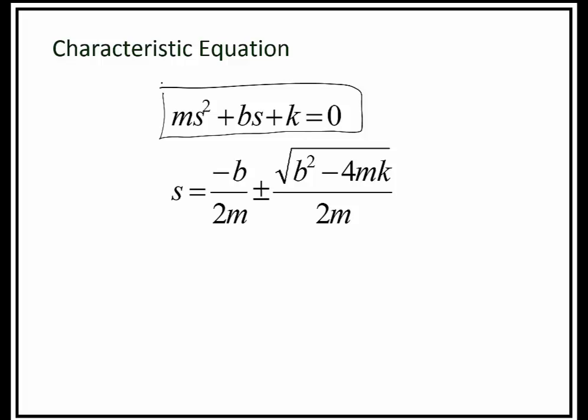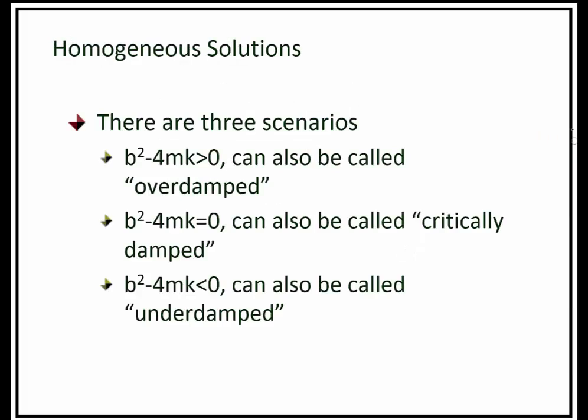In order to solve this algebraic equation using the quadratic formula, we find that s has two roots — two numbers — determined by the values of mass, spring constant, and damping coefficient. There are three different types of scenarios for the homogeneous solution based on the discriminant b squared minus 4mk.